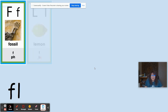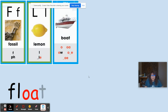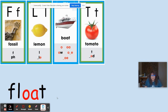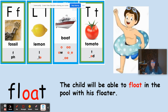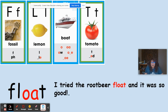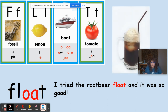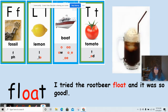F like in fossil, L like in lemon, O like in boat, T like in tomato. The word is float. 'The child will be able to float in the pool with his floater' — something that keeps him above the water; it floats, it doesn't sink. 'I tried the root beer float and it was so good' — in this case it's a drink: soda called root beer with vanilla ice cream. That's a root beer float.